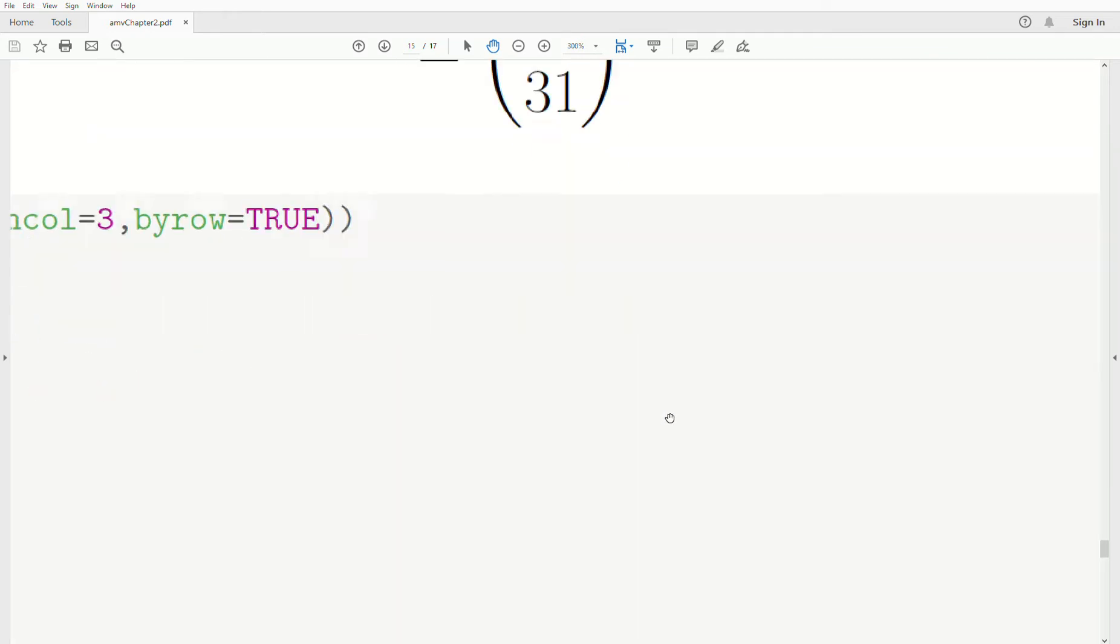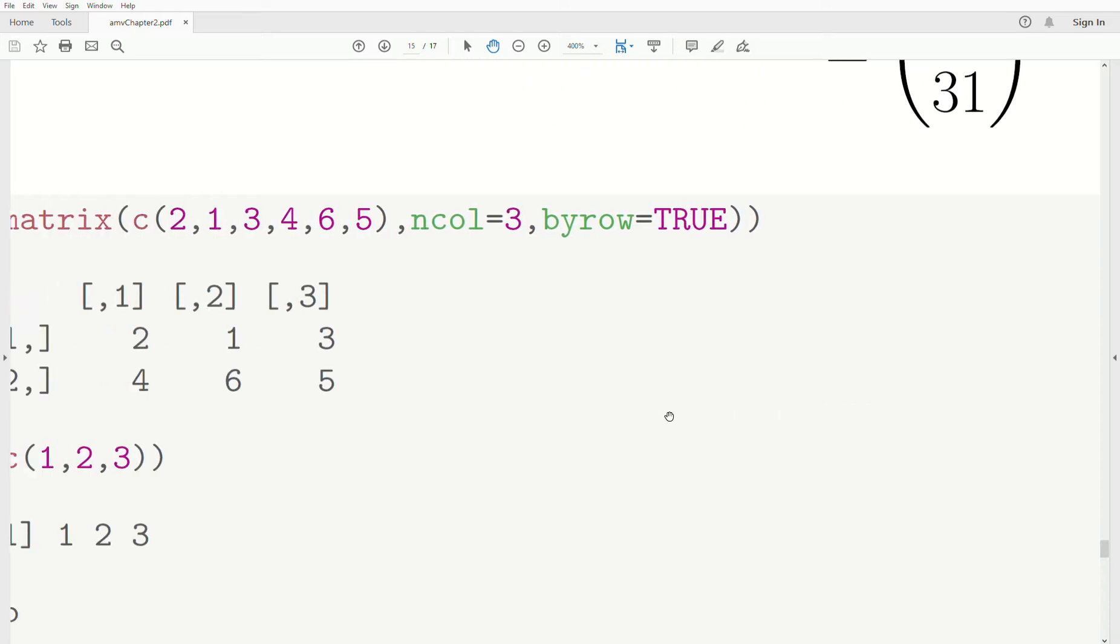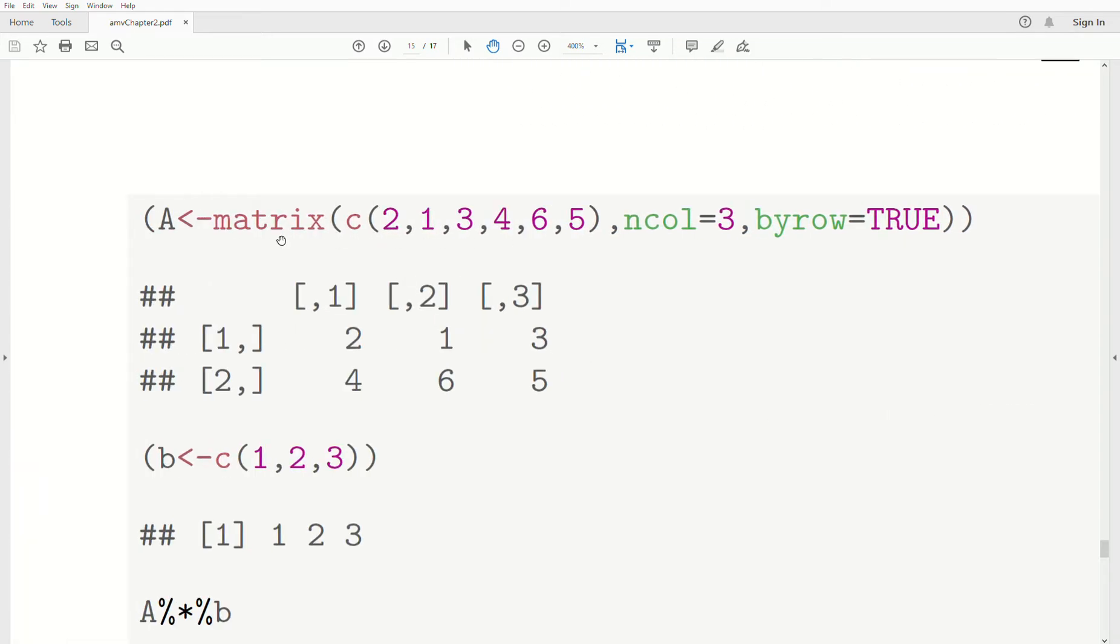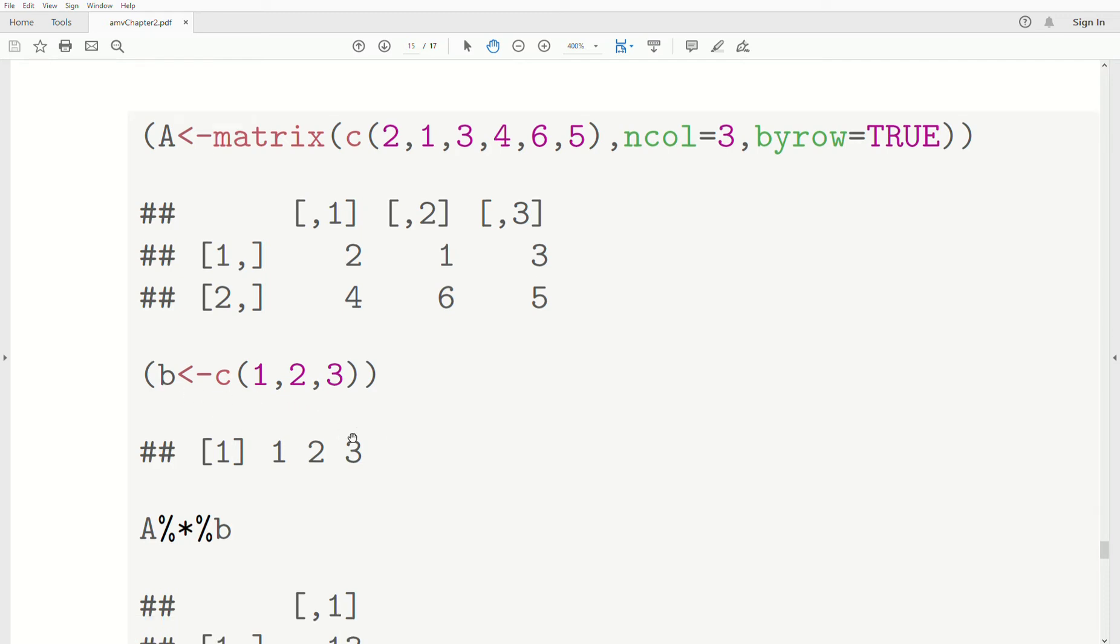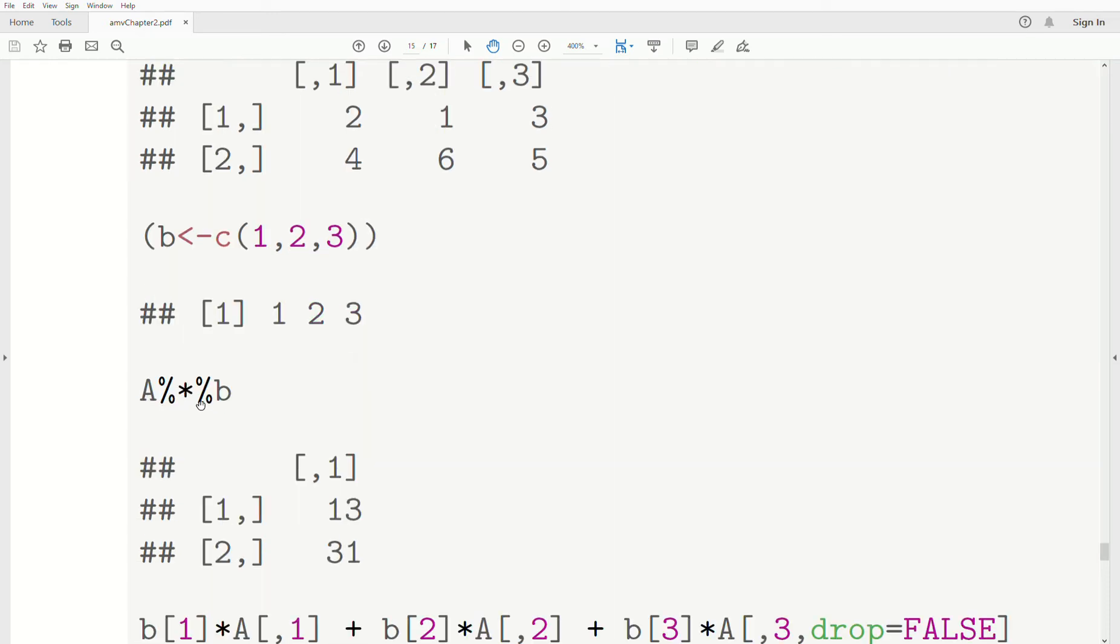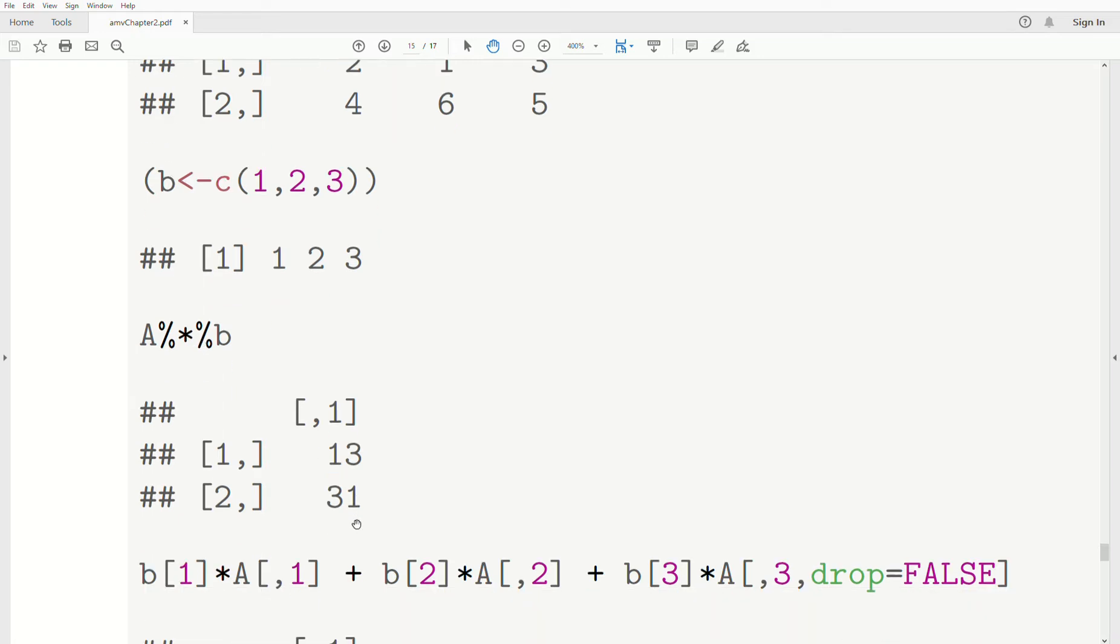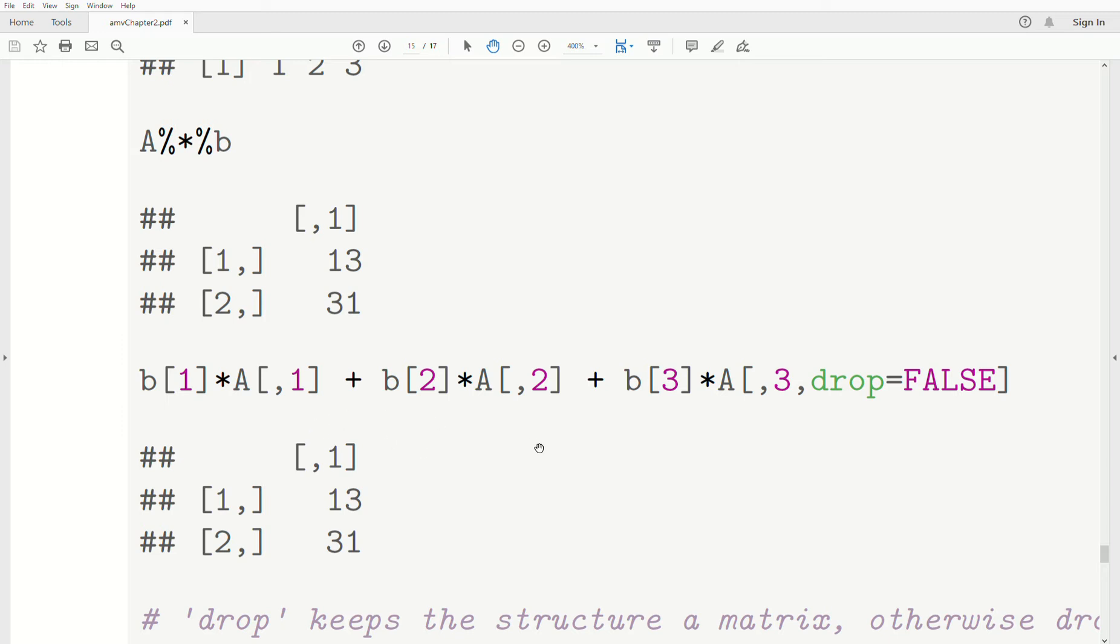Now, let's look at doing this in R. So we assign numbers to a matrix A. We have a vector B, and we do the A times B. Remember, this percent ampersand percent is the matrix notation to multiply. And we get 1331. But if we were to do this using a linear combination of the columns of A, we'd do it like this.